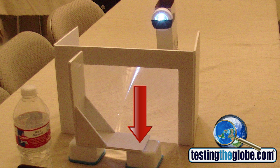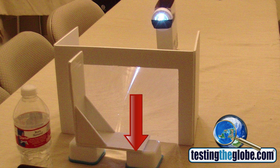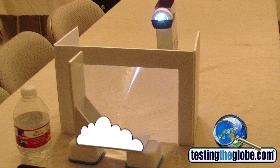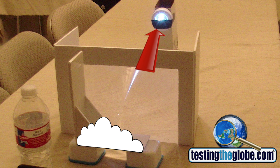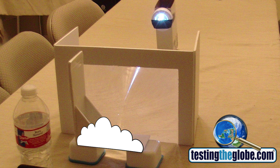The bottom of this stand represents the bottom of the clouds. As you can see, the light is well above what would be the bottom of the clouds in this example. So let's see what happens.